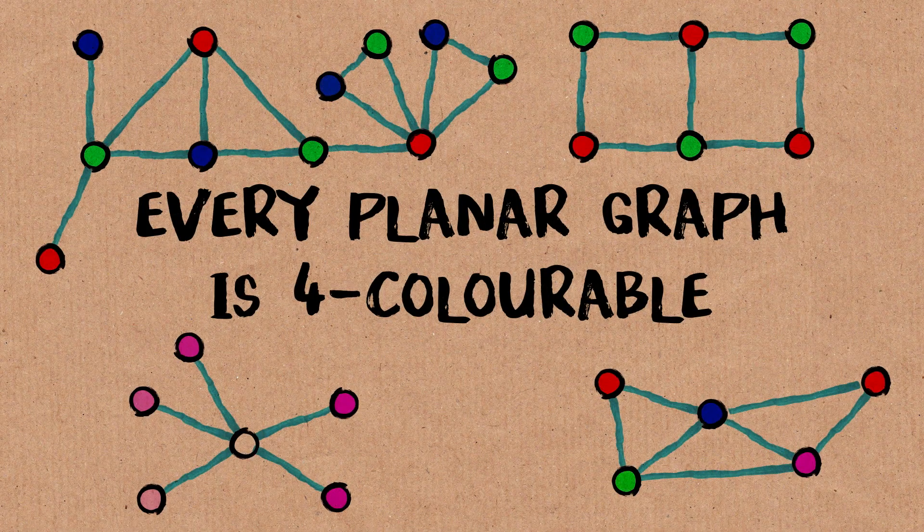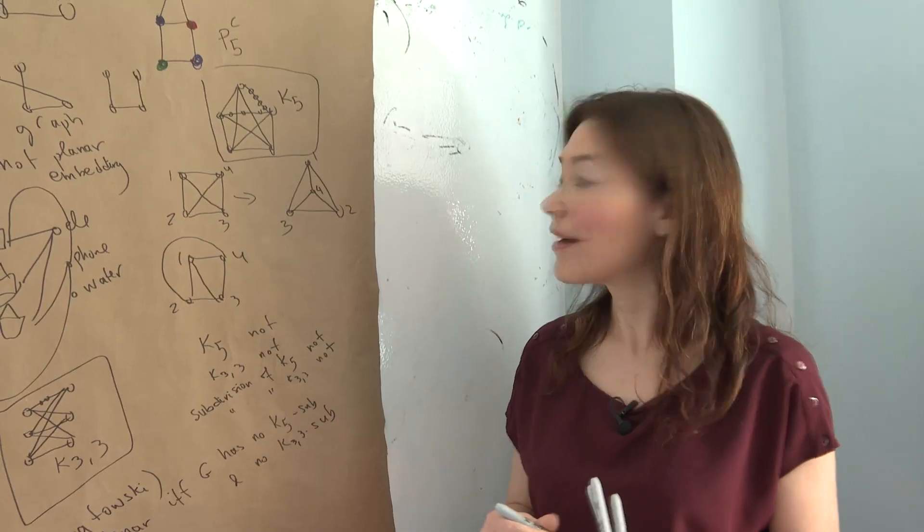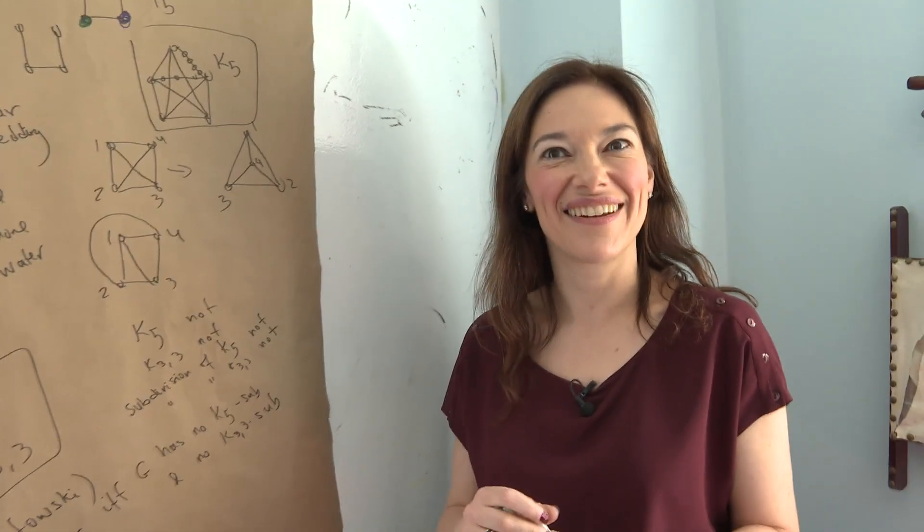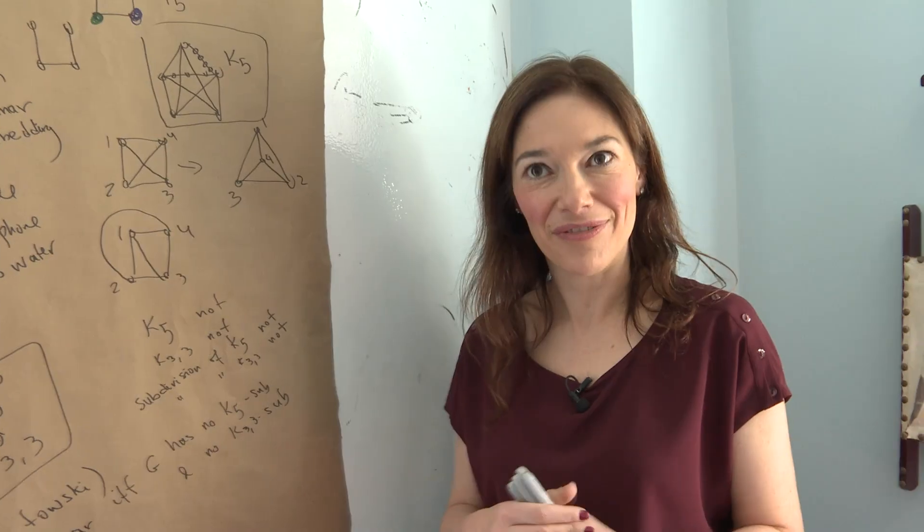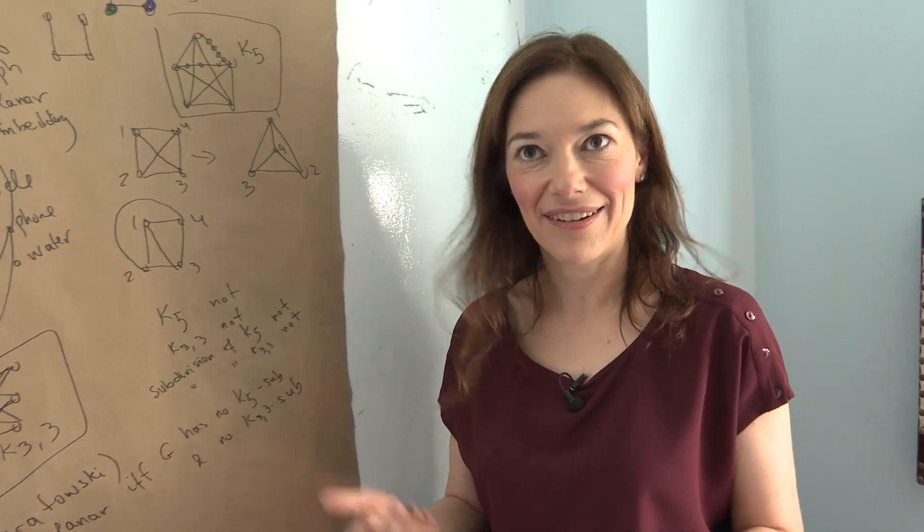The theorem is, it's called the four color theorem. Every planar graph is four colorable. It comes from map coloring.